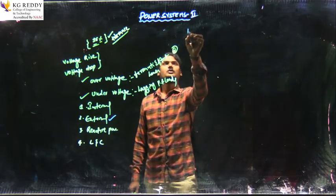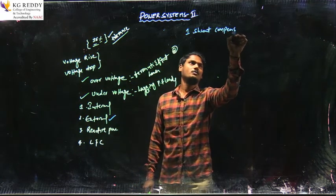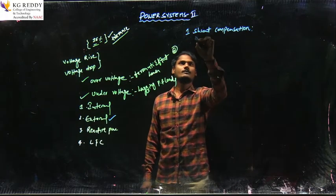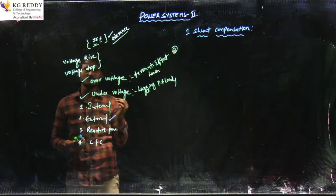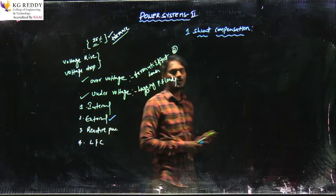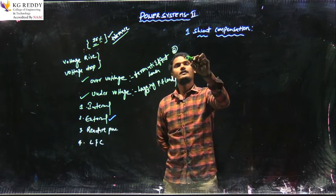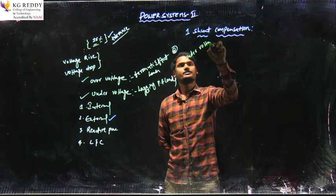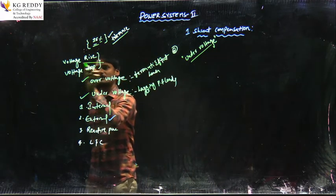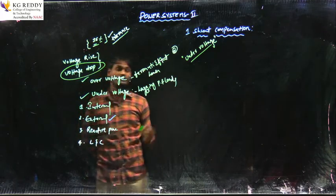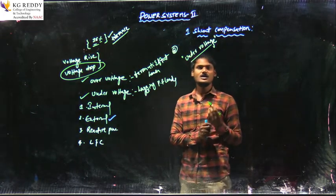Today we are going to study shunt compensation. In shunt compensation, we connect a capacitor in parallel with the power system. This technique is useful to neutralize the under-voltage condition — that is, the voltage drop effect. Whenever voltage drops below its rated value, we apply shunt compensation.